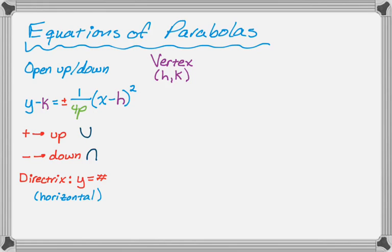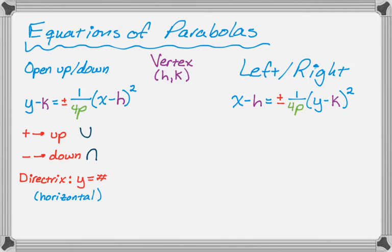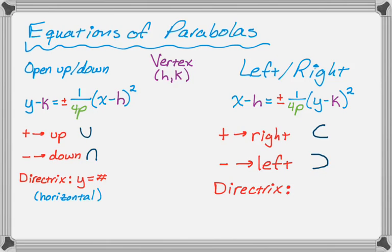And then, of course, we could open left or right. So you're probably more familiar with the up-down type because it's a function of x. Left-right, those graphs are not going to be a function. And you're going to end up with x minus h equals plus or minus 1 over 4p, and then y minus k squared. So it's essentially the same thing. We just switch the x minus h and the y minus k. And if there's a plus, it's going to open to the right. If there's a minus, it opens to the left. And in this case, the directrix is always going to be x equals a number, so it's going to be a vertical line. And then for all of them, eccentricity is 1, so you just kind of have to remember that.